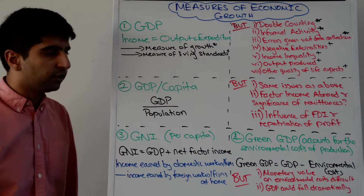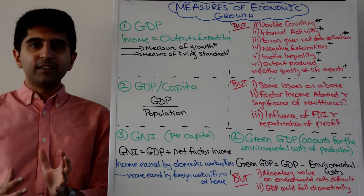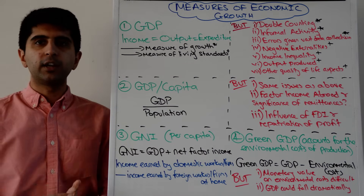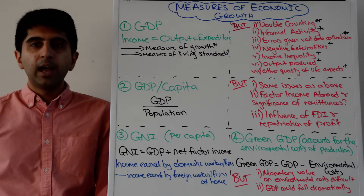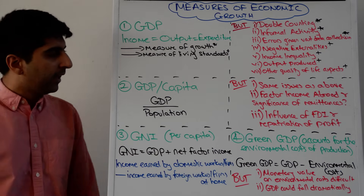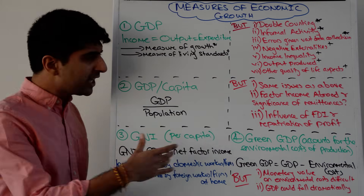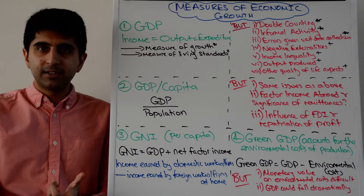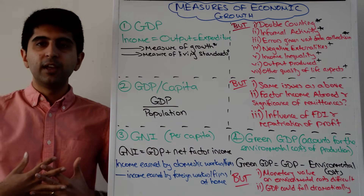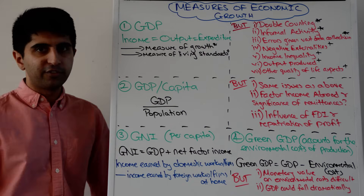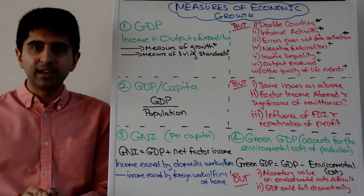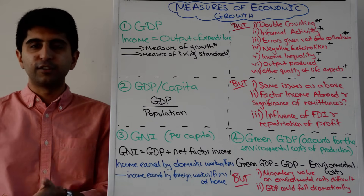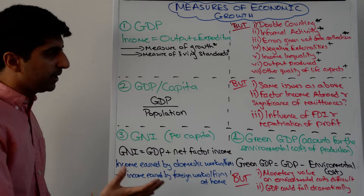But there are issues with using GDP per capita as well. The same issues mentioned above apply, but there are also some specific issues. Remittances are becoming much more significant in the world now. Remittances are when domestic workers leave their country, work abroad to earn higher incomes, and then send that income back to the home country. GDP and GDP per capita will not take into account any factor income earned abroad — whether that's domestic workers or domestic businesses working abroad — even though a lot of that income is sent back home and is clearly increasing living standards.